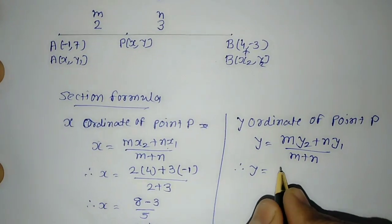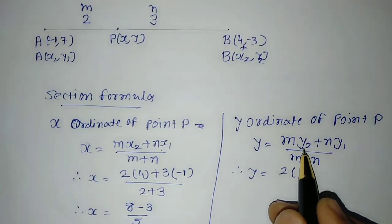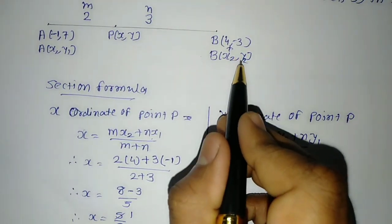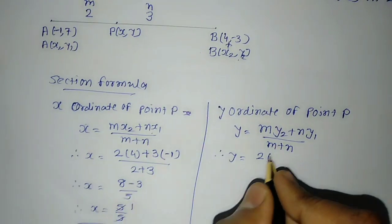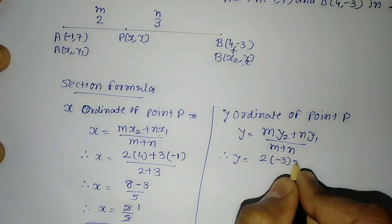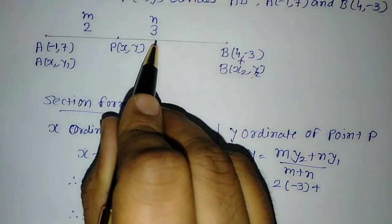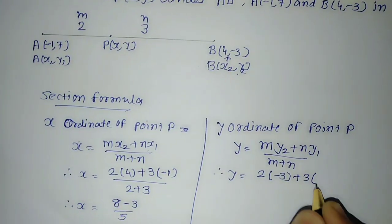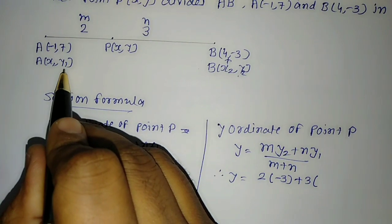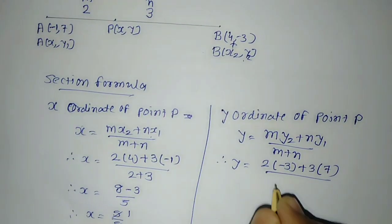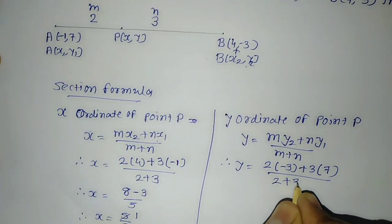M is 2, Y2 = -3, N = 3, Y1 = 7. Therefore Y = (2×(-3) + 3×7)/(2 + 3).